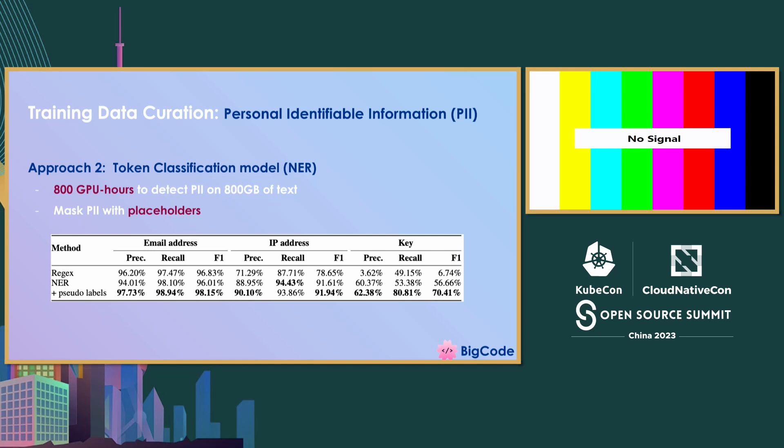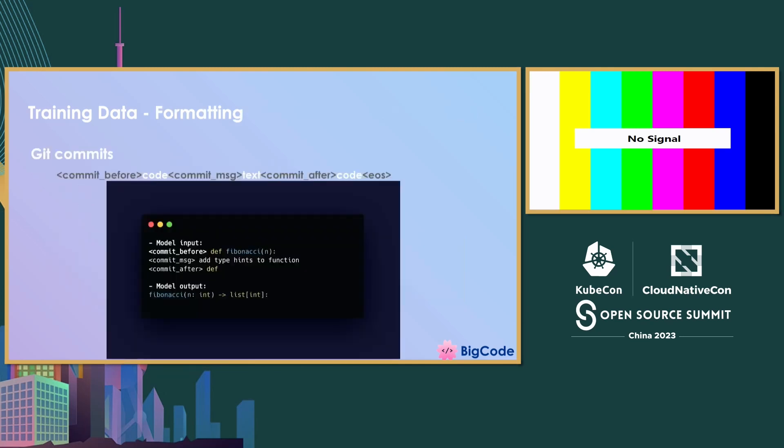After we detected all this personal information, we masked it with placeholders. For example, for names we had a token that says 'name', and for IP addresses we replaced them with private IP addresses. This shows you the difference between the regex approach and this NER plus pseudo-labels approach. For keys, the precision with regex was really low — we found this was especially because of some programming languages where metrics were disproportionate. When we moved to the NER approach, we managed to get 70% F1 score, which is a big improvement.